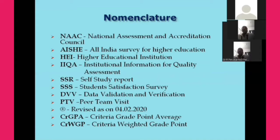In this presentation, I have mentioned the data as per the quality manual issued in March 2019, but the NAAC Council amends the manual from time to time. The latest amendment is as on 4th February 2020. Wherever I have mentioned revised data, I have superscripted that value with R. CGPA is Criteria Grade Point Average. CRWGP is Criteria Weighted Grade Point.